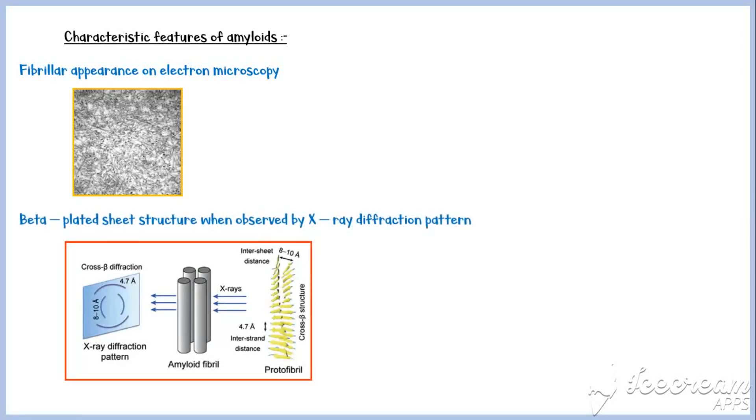All the types of amyloids have a fibrillar appearance when looked under an electron microscope, as you can see in this picture. And all the amyloids have a beta-plated sheet structure when observed by X-ray diffraction pattern.